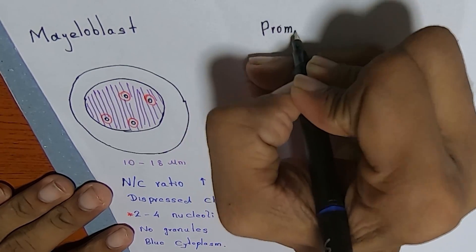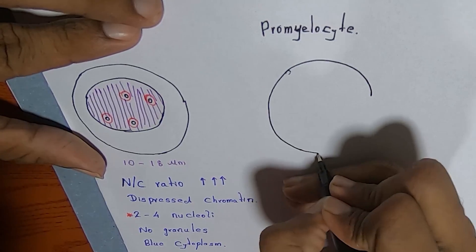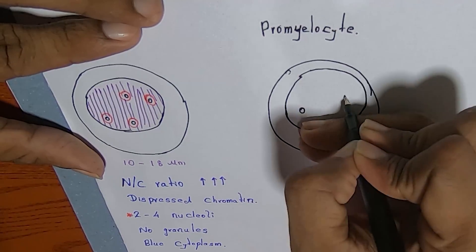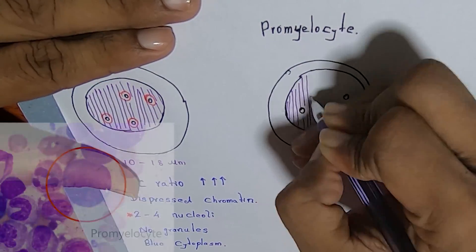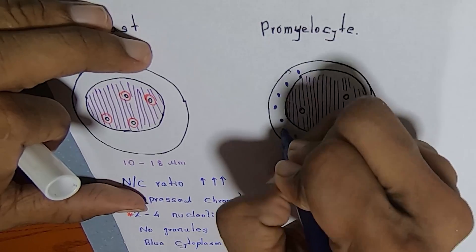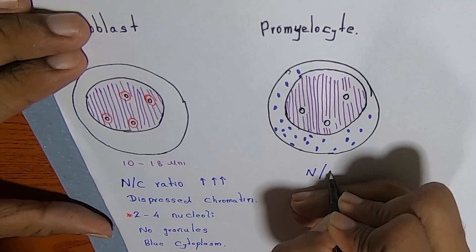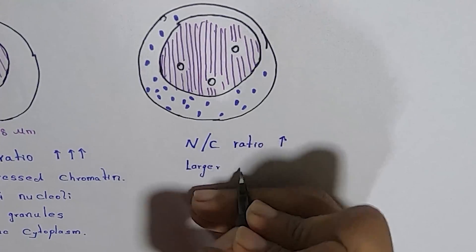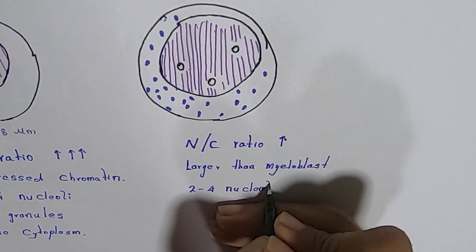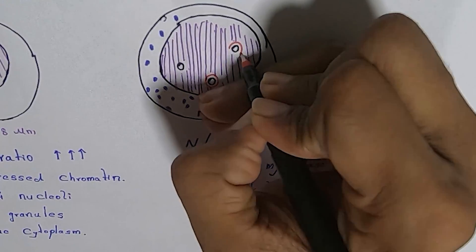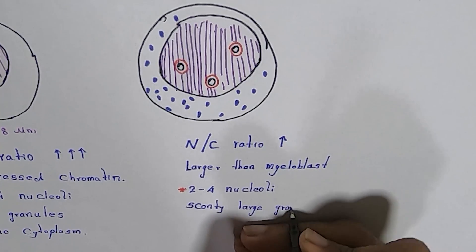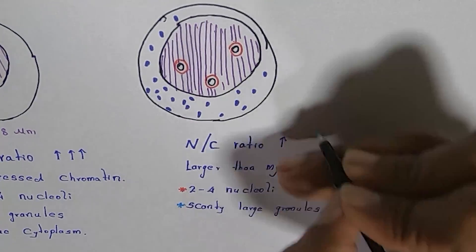Promyelocyte: when we consider promyelocyte, it is about 12 to 18 micrometers in size and usually a little larger than myeloblast cells. Actually, these promyelocyte cells are the largest immature myeloid cell type. Nuclear to cytoplasm ratio is high. Similarly, it has two to four nucleoli and the chromatin is slightly condensed. It contains reddish to purple azurophilic large granules in faint blue color cytoplasm.